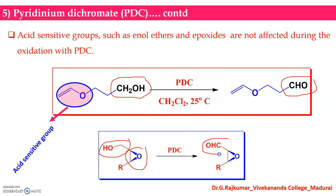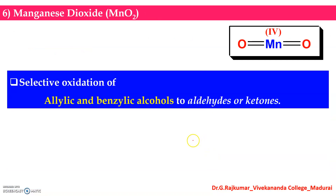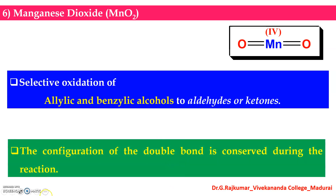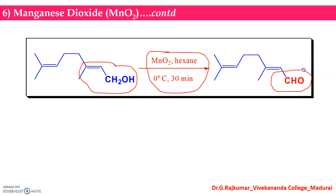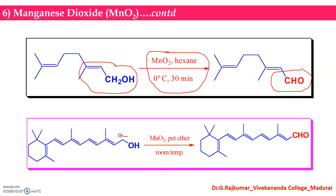The next reagent is manganese dioxide (MnO2). This can be used for the selective oxidation of allylic and benzylic alcohols to aldehydes or ketones. The configuration of the double bond is conserved during the oxidation reaction with MnO2. An allylic hydroxyl group in the presence of manganese dioxide gives aldehyde as a product, and similarly another allylic hydroxyl group can be oxidized into an aldehyde.